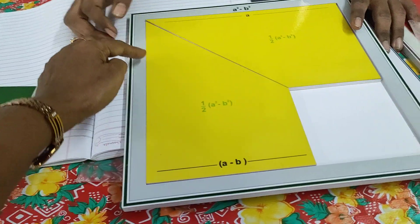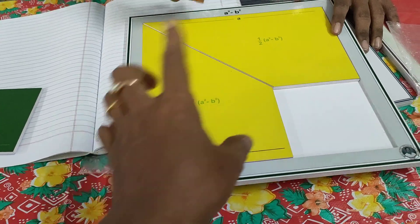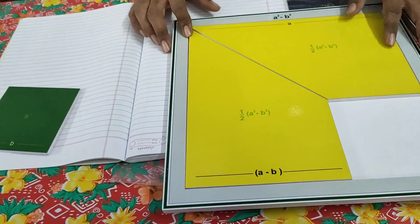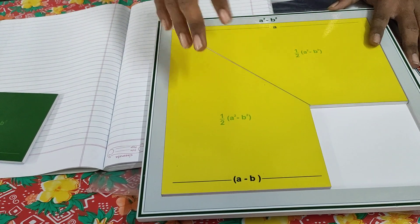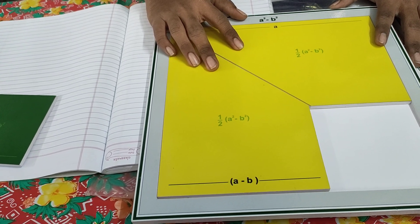What is the length of this one? The length will be a - b because the big square has side a. To prove this formula, we need to split this area into two equal halves, and these equal halves become congruent.